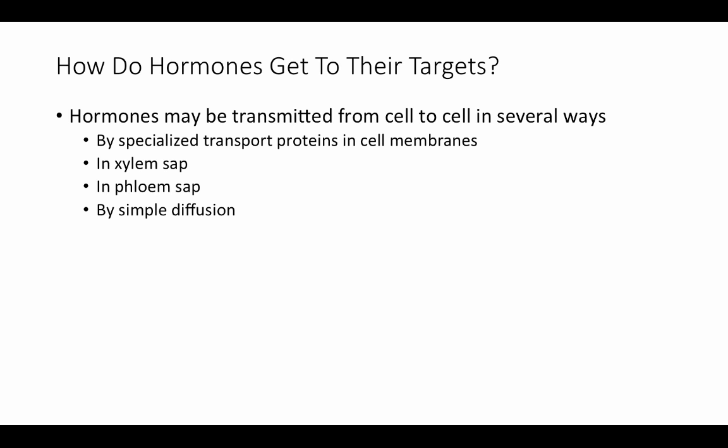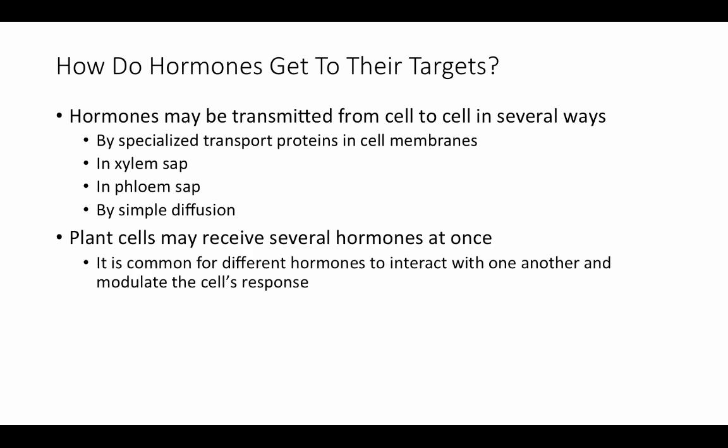Plant cells may receive several hormones at once, so interaction between different hormones is common — that modulates the cell's response. The balance of different hormone levels determines what kind of response the plant will have. To start thinking about hormones, we'll consider the phototropic response. Plants sense and respond to a specific narrow range of wavelengths of light in the visible spectrum.